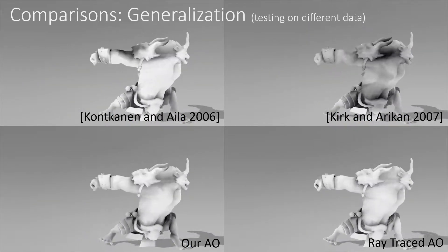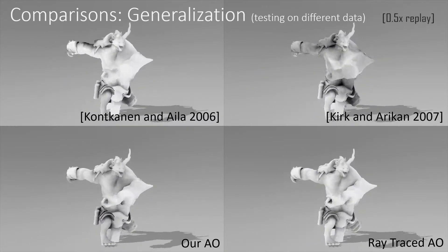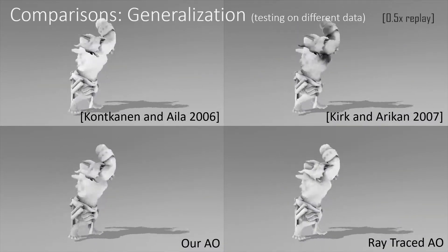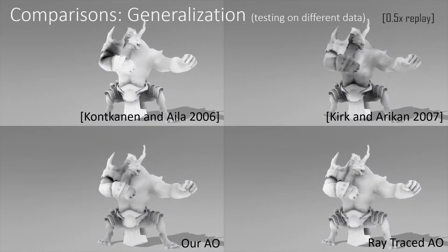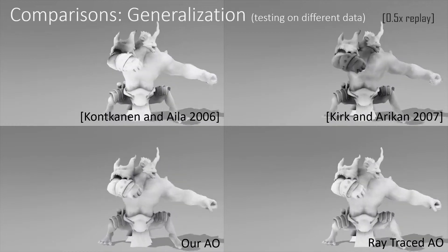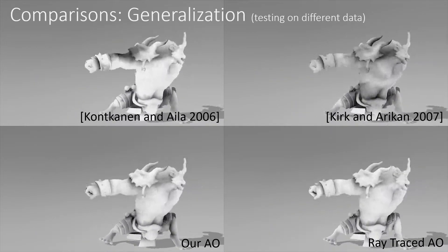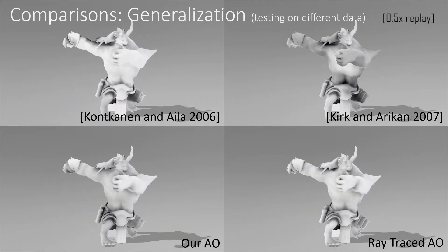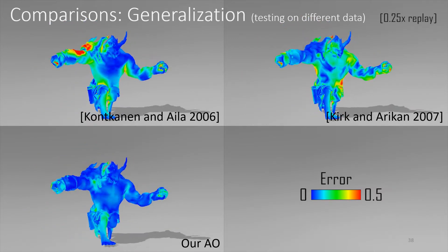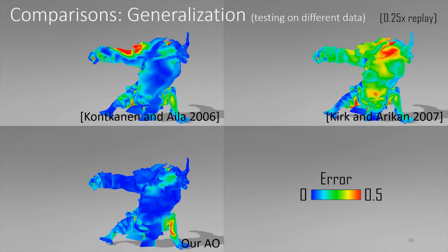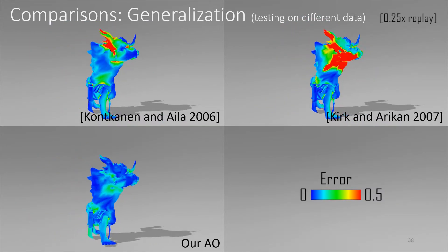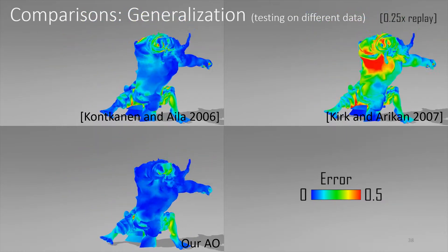In these examples, we show how well the method handles generalization — that is to say, the poses are different from the training data. We can see that our model can still closely match the ground truth data, while previous work starts to struggle. Here we can also see the error compared to ground truth in the generalized situation.